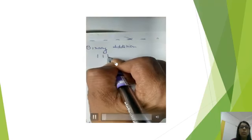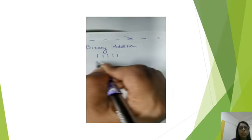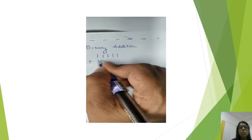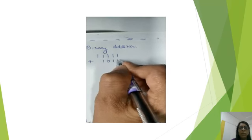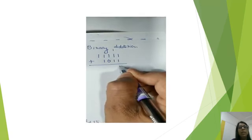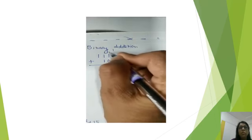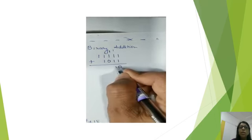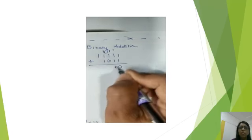I have taken the number 1111 and I am adding to this 1011. 1 plus 1 is 0 and carry 1. When there are three 1's it becomes 1 and 1, that is sum is 1, carry forward 1.